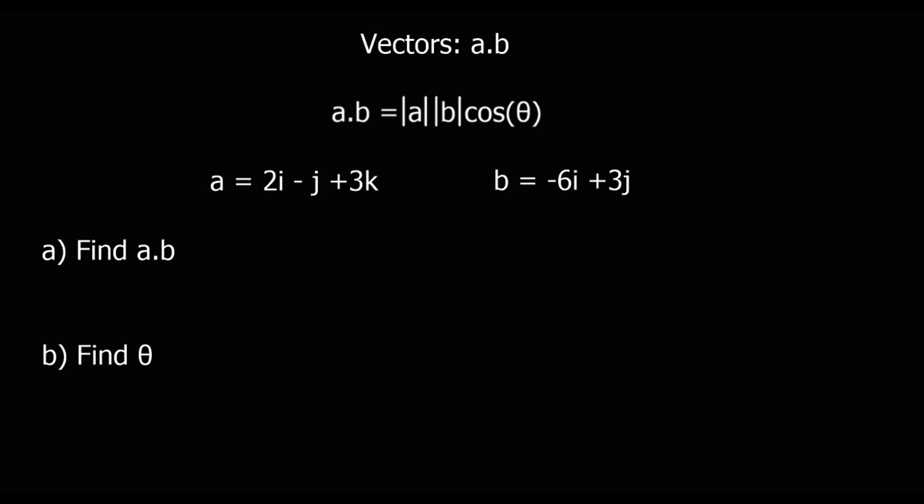So here we've got two vectors: a is 2i minus j plus 3k, and b is minus 6i plus 3j. We're asked to find a·b. There's a really easy way of finding a·b — we times the i's together, times the j's together, times the k's together, and add them all up.